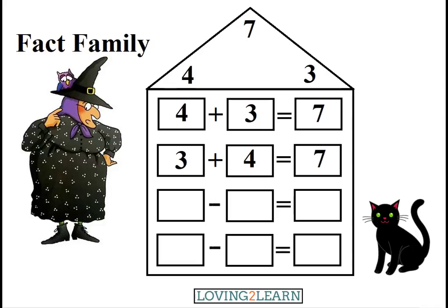This time, Midnight says, let's start with the 7. So we have 7 minus 3 equals what? That's right, 4! So we can count down from 7 and take away 3: 7, 6, 5, 4, or we just know that 7 minus 3 equals 4.